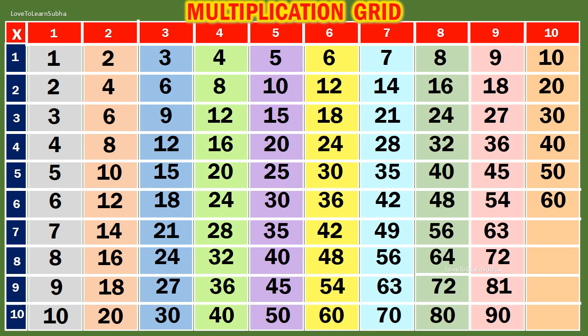10 six are 60. 10 sevens are 70. 10 eights are 80. 10 nines are 90. 10 tens are 100.